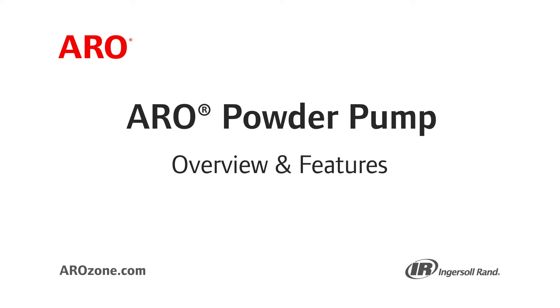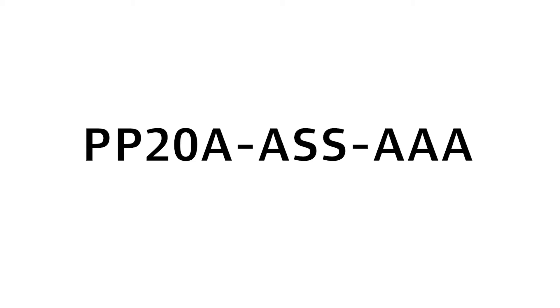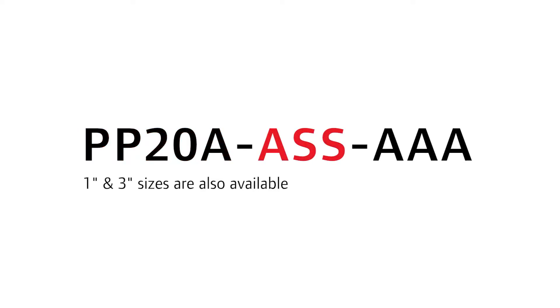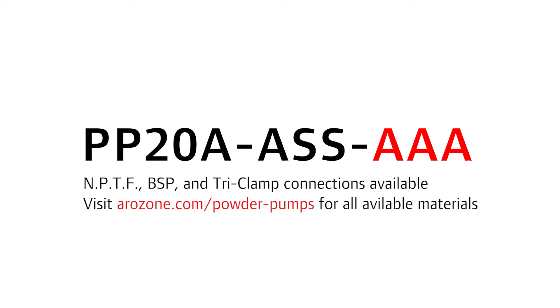Today, we will be talking about the ARO powder pump model PP20A-ASS-AAA. The PP20A indicates that this is a 2-inch powder pump. The next three digits indicate the connection type, wetted parts, and hardware materials, with the last three digits indicating the seat, ball, and diaphragm materials.